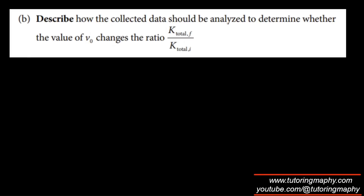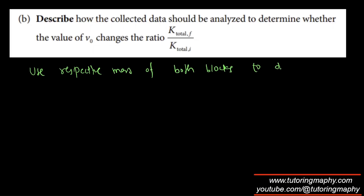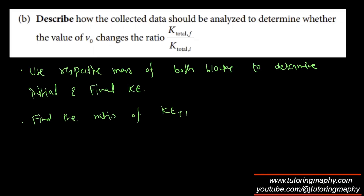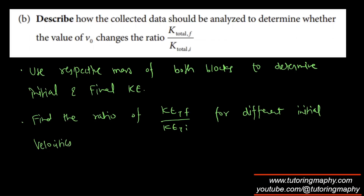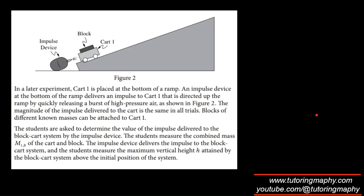Describe how the collected data should be analyzed: use the respective masses of both blocks to determine the initial and final kinetic energy. Find the ratio of KE total final to KE total initial for different initial velocities and compare. If the ratio is changing, then V0 changes the ratio; if it is not changing, then it is not changing the ratio.